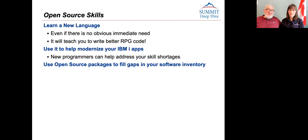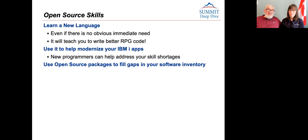Last but not least — open source. My number one point here is that everyone should learn a new language. If you only know RPG and CL and maybe some SQL, learn something else — Node.js, Python, PHP. Even if there's no obvious immediate need, it's going to teach you to write better RPG code. I completely rethought my usage of arrays in RPG after I started coding in PHP. It also made it far more obvious why I should write in procedures and break my logic down into smaller pieces.